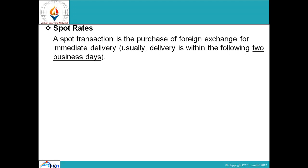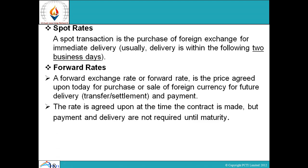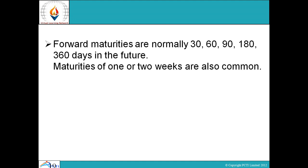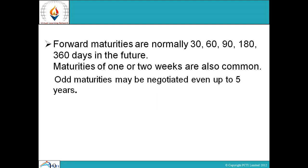Spot rates: a spot transaction is the purchase of foreign exchange for immediate delivery — usually delivery is within the following two business days. Forward rates: a forward exchange rate or forward rate is the price agreed upon today for purchase or sale of foreign currency for future delivery — that is, transfer, settlement, and payment. The rate is agreed upon at the time the contract is made, but payment and delivery are not required until maturity. Forward maturities are normally 30, 60, 90, 160, and 360 days in the future; maturities of one or two weeks are also common, and odd maturities may be negotiated up to five years.